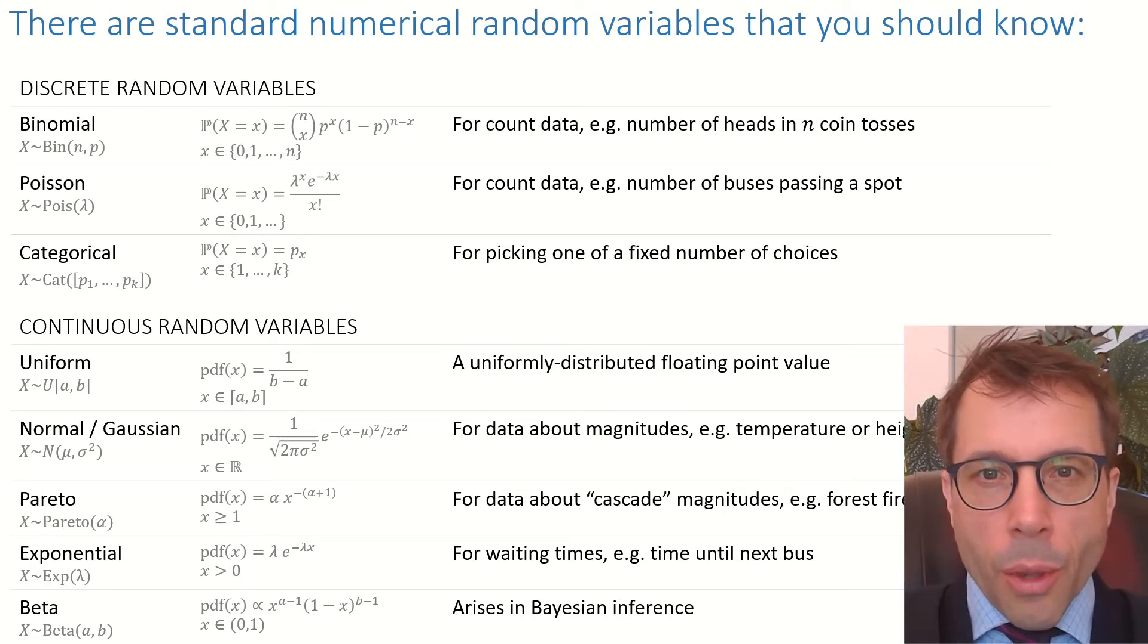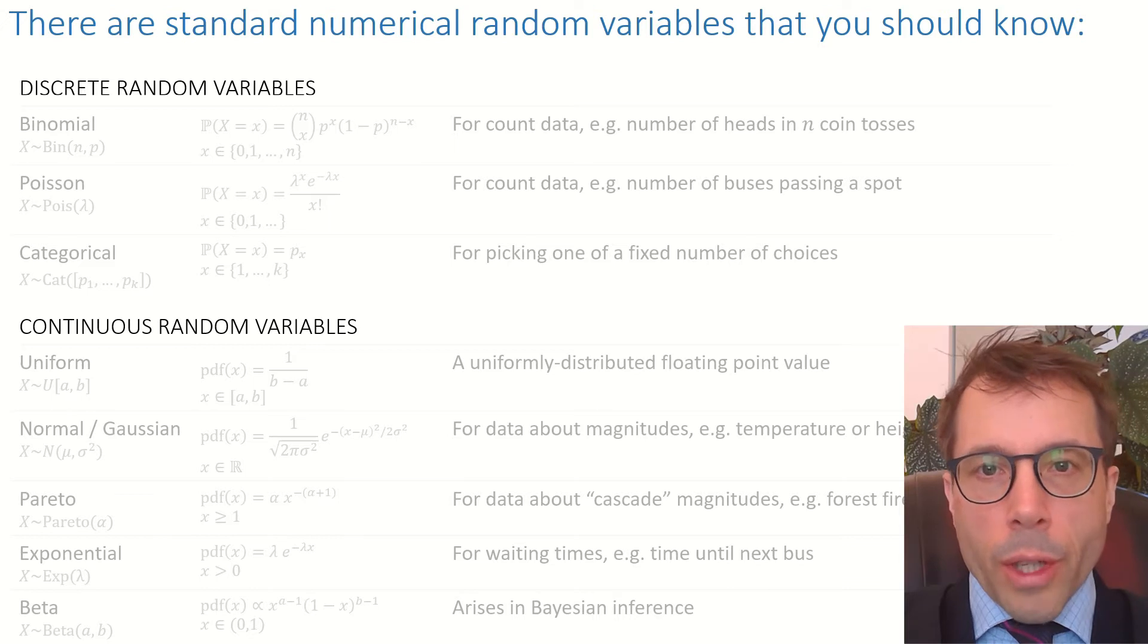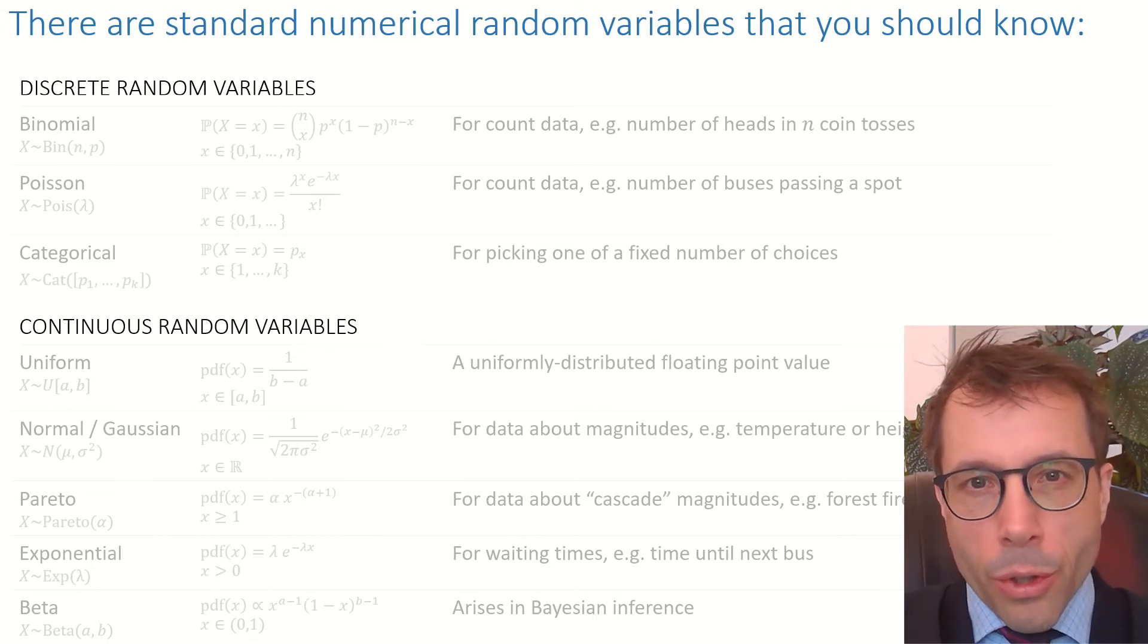One small thing is worth mentioning here—something you've already learned in an earlier course on probability. A discrete random variable returns integers, or more generally, it could be a value from some finite or countable set, for example a coin toss or a playing card chosen at random.